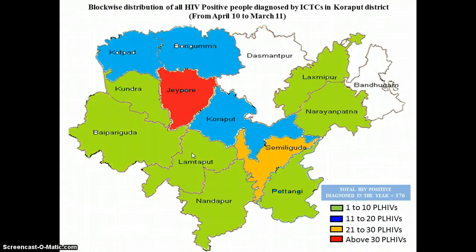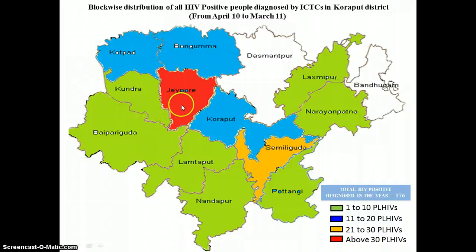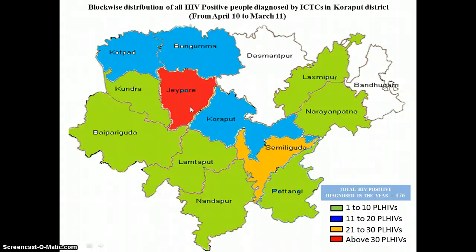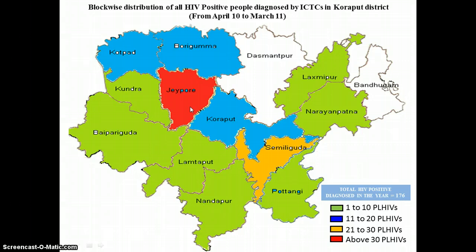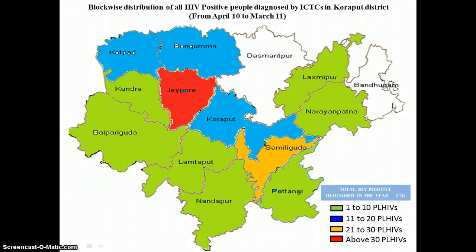This is a block-wise distribution of HIV positive people diagnosed. The district headquarters has a lot of cases, but incidentally Jayapur, which happens to be the second largest establishment in Koraput, has the maximum number of PLHIVs diagnosed in the last year. About 70 PLHIVs were diagnosed from April 2010 to March 2011. Dasmanpur and Vandugam do not have any PLHIVs diagnosed in the last one year.